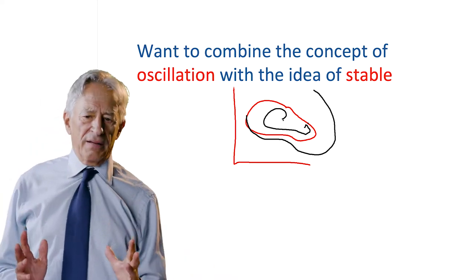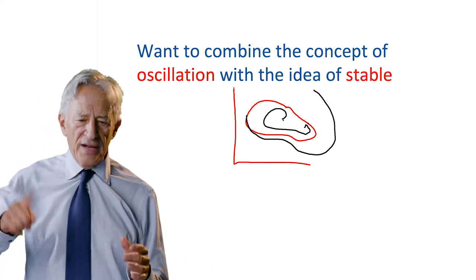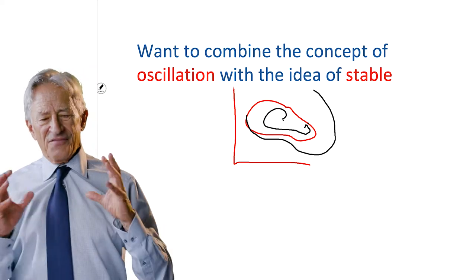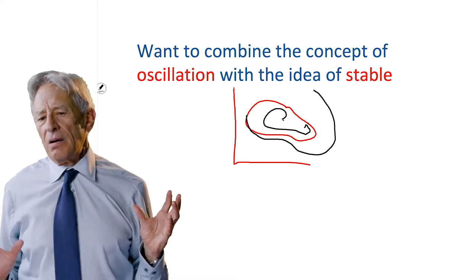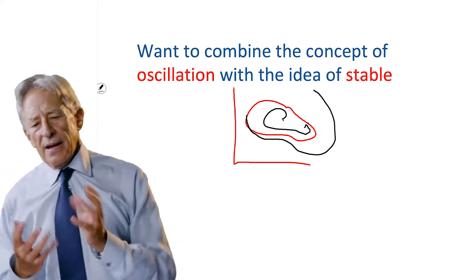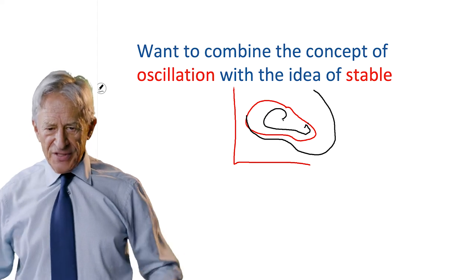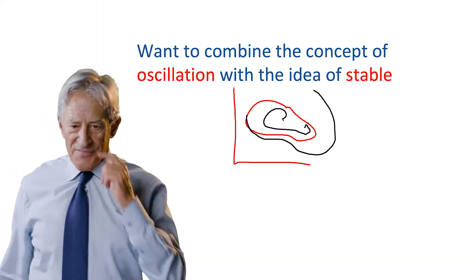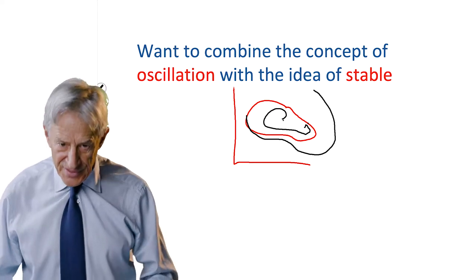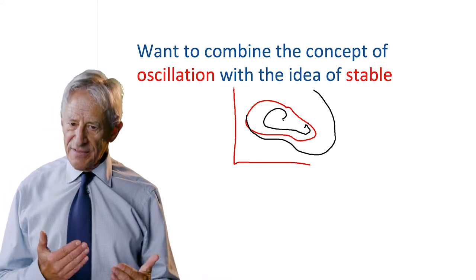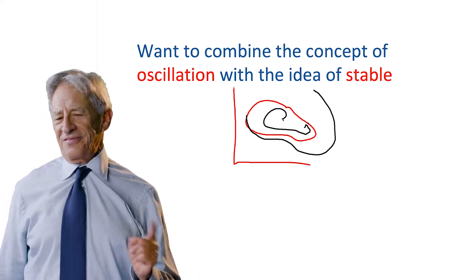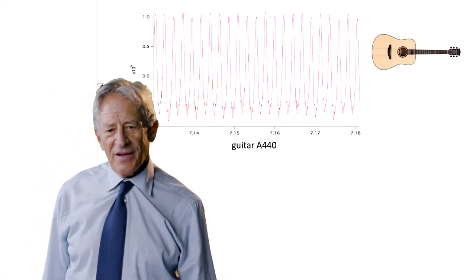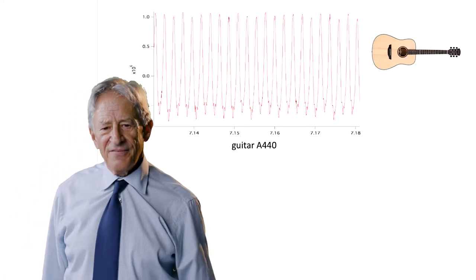We want to combine the concept of oscillation with the idea of stability. The first example of someone who really understood this and put them together was in a very interesting context — it was in the context of music.